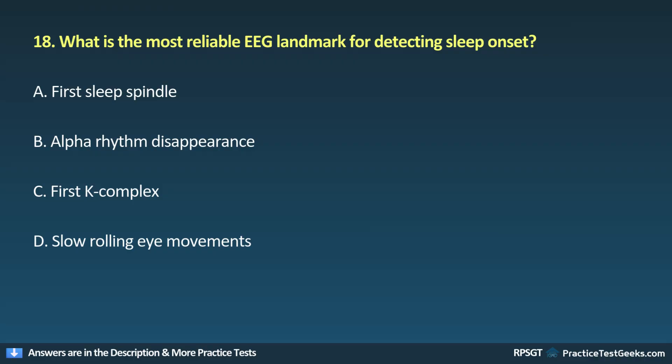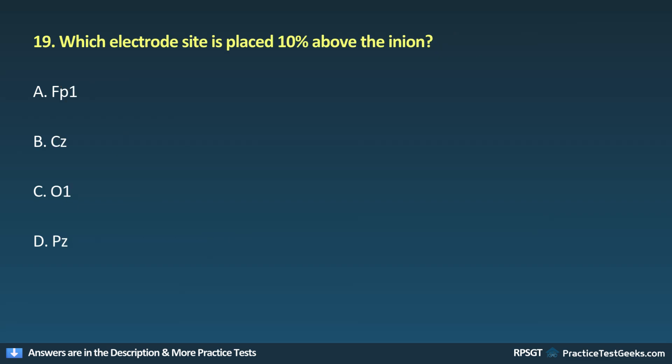Question 18: What is the most reliable EEG landmark for detecting sleep onset? A. First sleep spindle, B. Alpha rhythm disappearance, C. First K complex, D. Slow rolling eye movements.